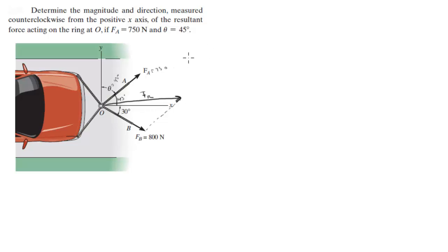So F_r in the x direction is going to be the x component of F_a, which is 750 cosine of 45 degrees, plus, because they're both going in the positive x direction, 800, which is F_e, cosine of 30 degrees. When you place in your calculator, it's going to give you 1223.15 Newtons.